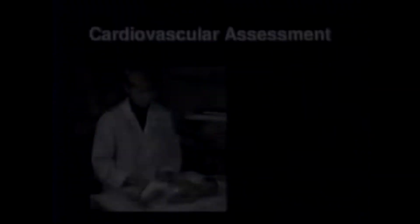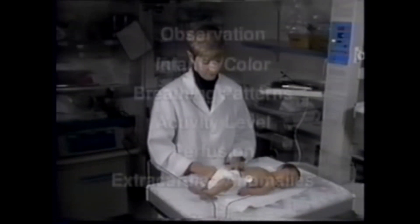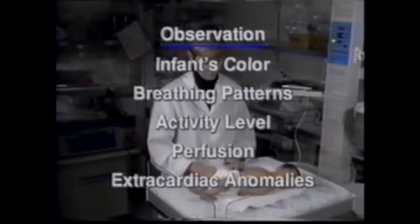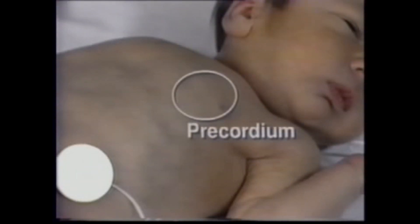Assessment of the neonatal cardiovascular system should begin with observation of the infant's general appearance. This should include inspection of the infant's color, observing for signs of central cyanosis, breathing patterns, activity level, perfusion and mottling, and recognition of extra-cardiac anomalies that may be associated with congenital heart disease. Once this general inspection is complete, closer inspection of the precordium and apical impulse is necessary.